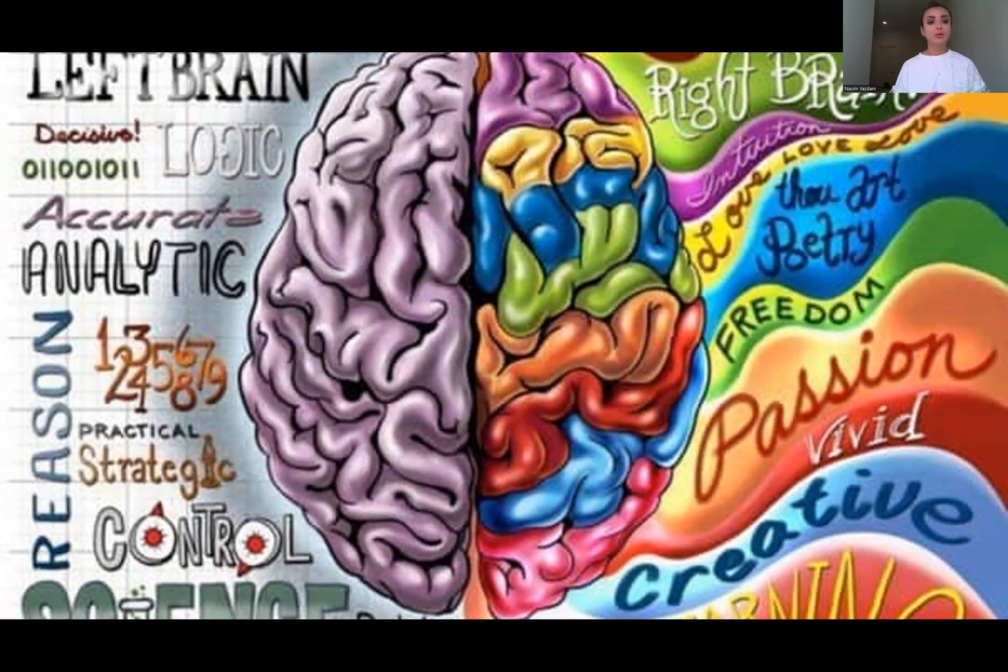Our corpus callosum is responsible for integration of neurons in the left side of the brain and the right side of the brain. Corpus callosum allows communication and integration between these two hemispheres of the brain. And as a young child, this part, being the corpus callosum, is not fully developed and it won't be developed until we reach the age of 25.